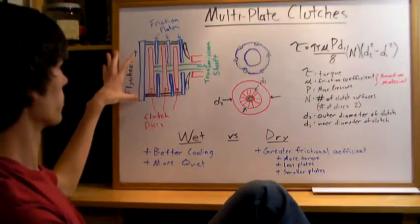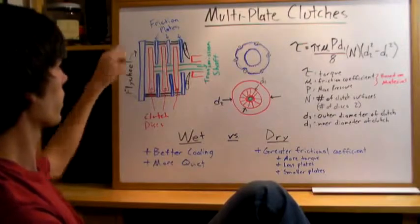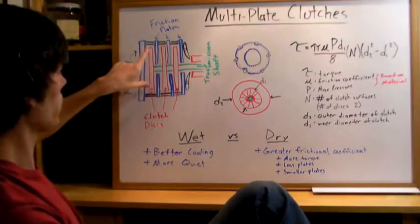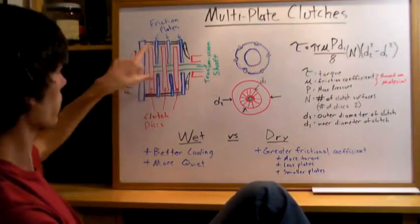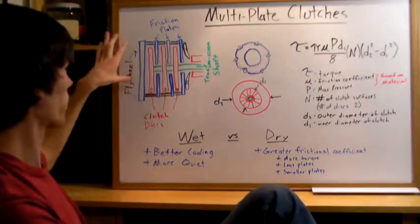Here you've got the flywheel, which is going to be connected to the engine crankshaft, so that will be rotating with the crankshaft. And then within each of these clutch discs, and on the outside, there are friction plates. These friction plates all rotate with the flywheel.